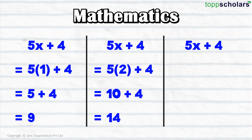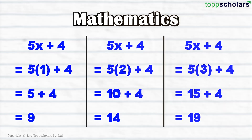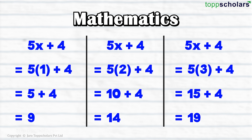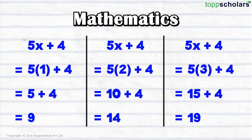Again, if you take the expression and put the value as 3, you will get the answer as 19. Now if you observe closely, when the variable changed its value, it changed the value of the term and also changed the value of the whole expression. But what about this 4? The number 4 remains 4 throughout.